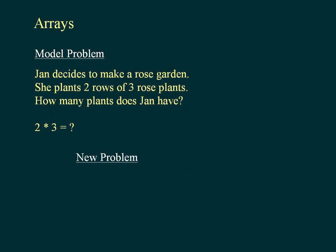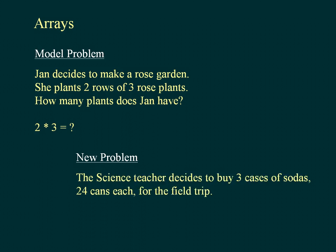New problem: The science teacher decides to buy 3 cases of sodas, 24 cans each, for the field trip. How many cans were purchased? 3 multiplied by 24 is equal to what?